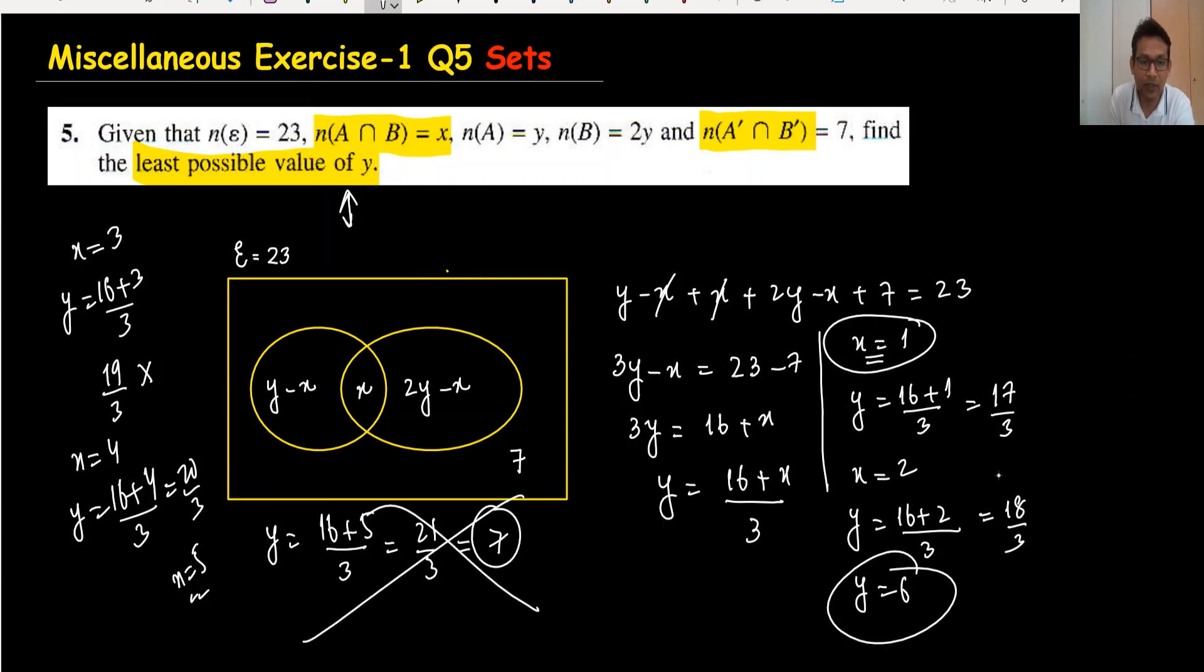If I substitute x = 0, y = (16 + 0)/3 = 16/3, which is decimal, so not possible. Therefore, x = 2 and y = 6 is the smallest value, and we're done.